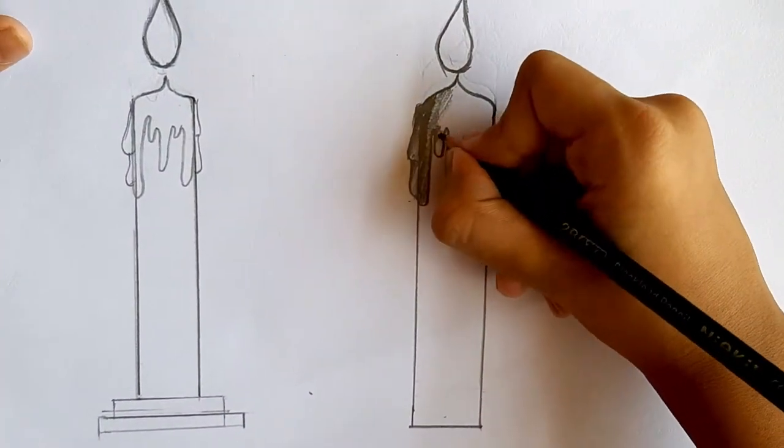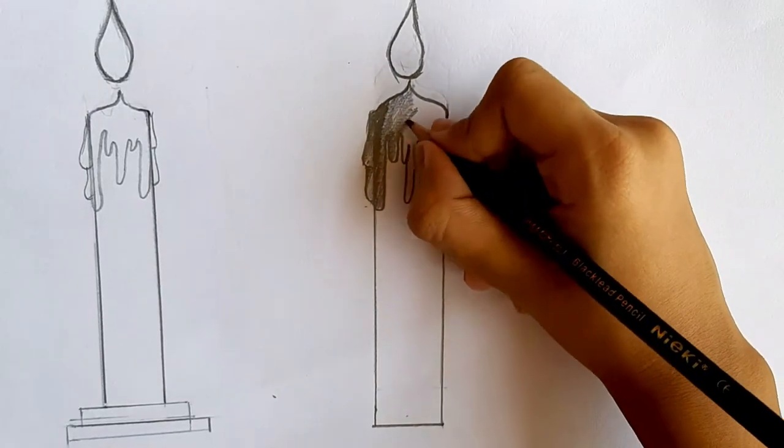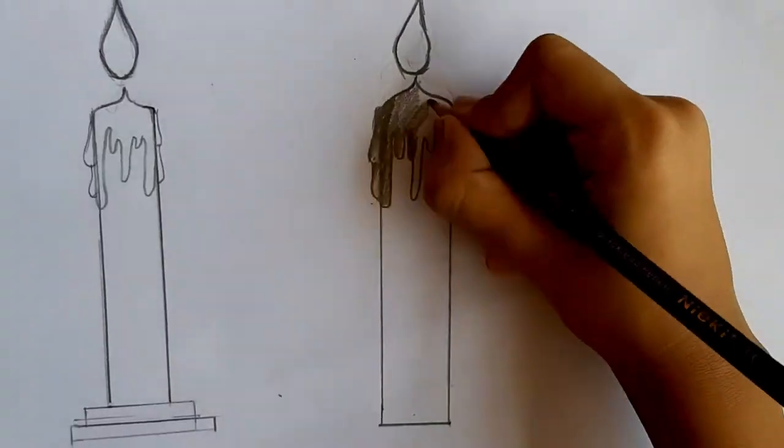Now slightly loosen your grip to give a medium shade. Whenever I'm doing darker shade, I'm pressing the pencil.